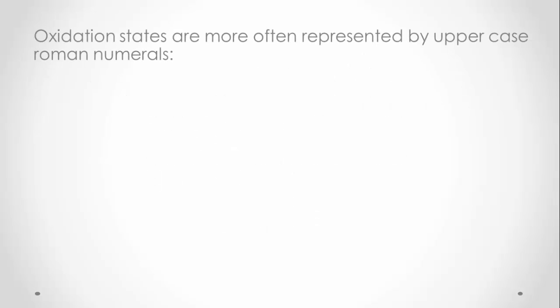Oxidation states are often represented by Roman numerals instead of Arabic numerals, in order to help distinguish them from other numbers we commonly use, like charge. We typically write the oxidation state directly above the element to which it relates. You don't have to use Roman numerals, but it is common practice in chemistry.